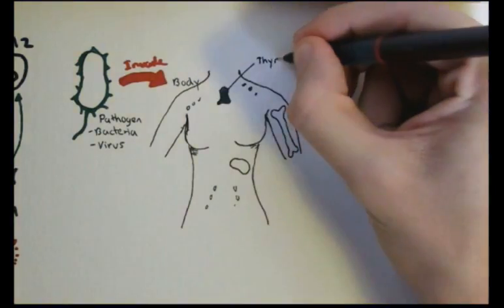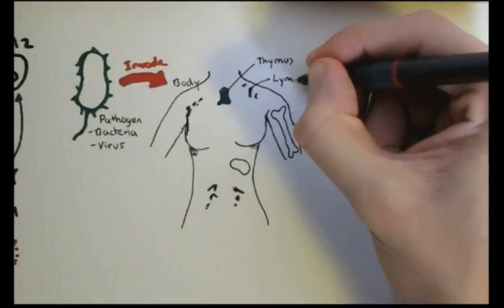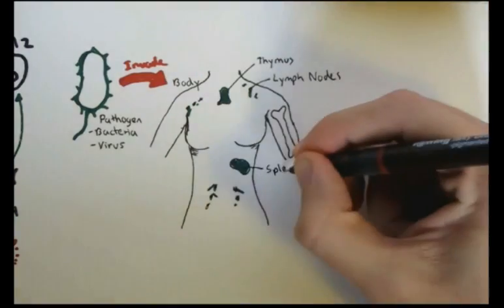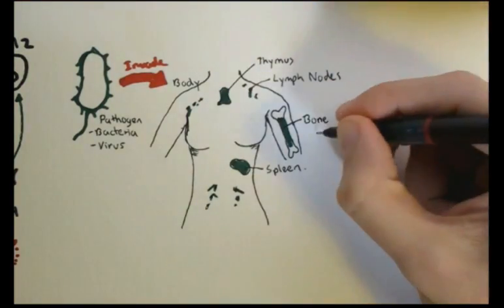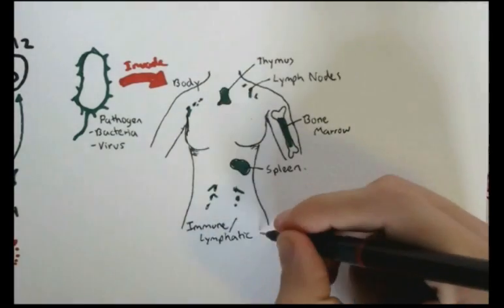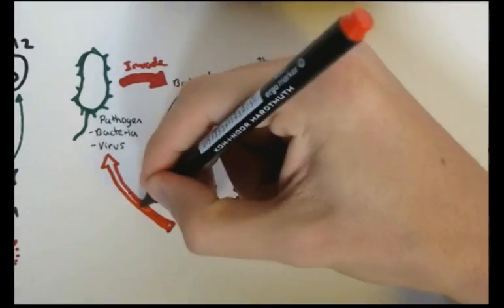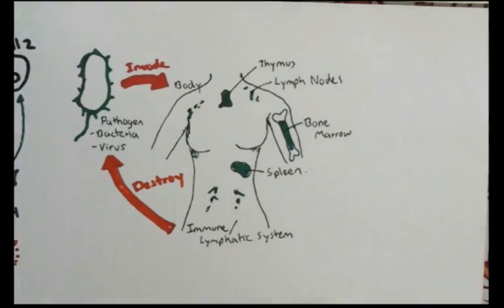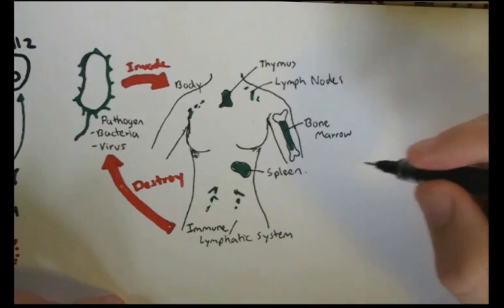These special organs are the thymus, lymph nodes, spleen, and bone marrow, where special immune cells are produced or matured. They are all connected in some way and are referred to as the organs of the lymphatic system. Basically, the body's immune cells, coming from these various organs, such as the thymus and bone marrow, will try to destroy the pathogen.